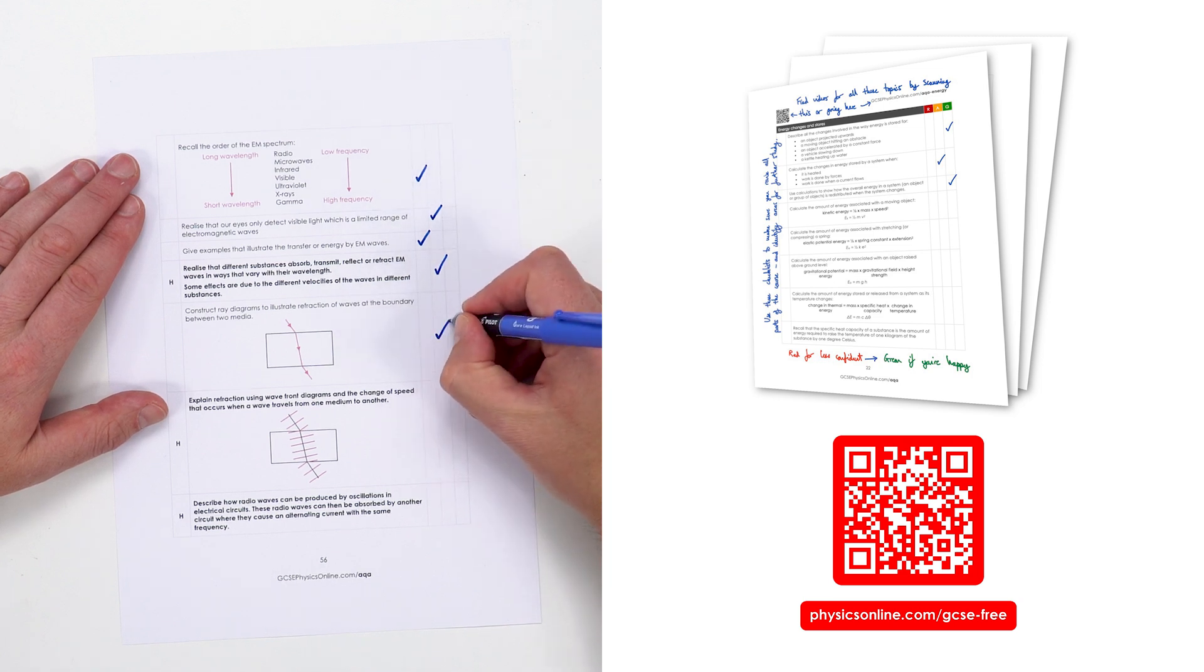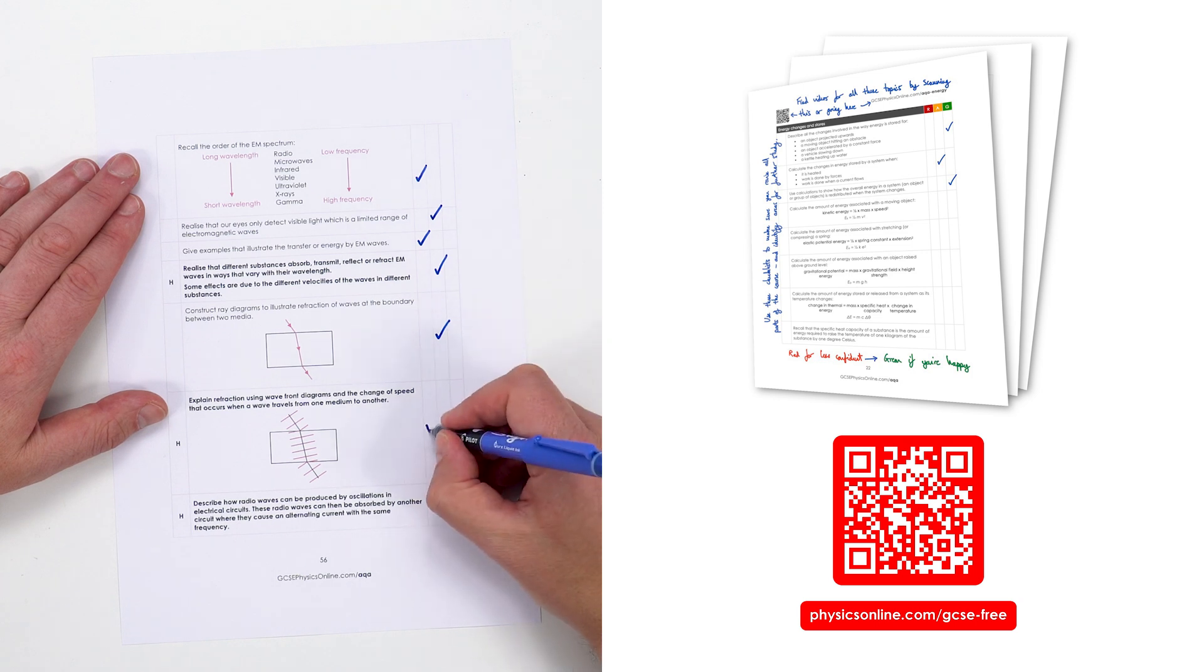There might be things you don't understand, which allows you to ask your teacher for extra help. By going through it line by line, section by section, you won't miss anything in your revision.